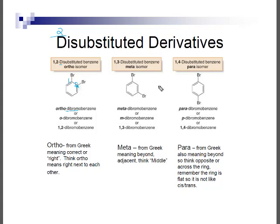For disubstituted benzene rings, you can number clockwise or counterclockwise: adjacent groups are 1,2; groups separated by one carbon are 1,3; and groups across the ring are 1,4. These are all isomers. Chemists often use Greek prefixes instead: ortho (right next to each other, 1,2), meta (middle position, 1,3), and para (beyond, as far apart as possible, 1,4). Ortho-dibromobenzene equals 1,2-dibromobenzene; you can abbreviate ortho as 'o'.